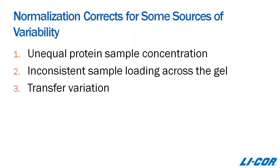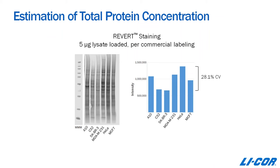When it comes to estimation of total protein concentration, that's something that can't be emphasized enough. It's really not safe to assume that your lysates all have uniform protein concentration, even if you're using a commercially available lysate. We evaluated a number of different commercially available lysates, loading each lane with five micrograms based on the manufacturer's reported concentration, then transferred those proteins to a membrane and stained it with Revert total protein stain. The graph on the right depicts the wide variation between each of these commercially available lysates — the CV across these lysates was about 28%.